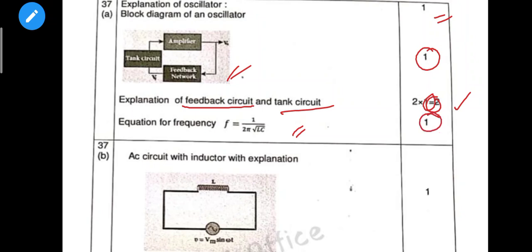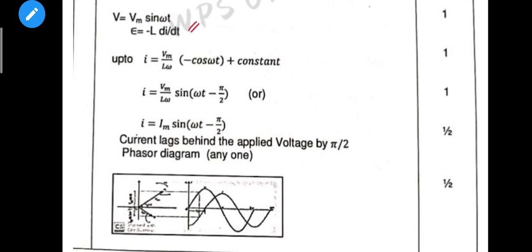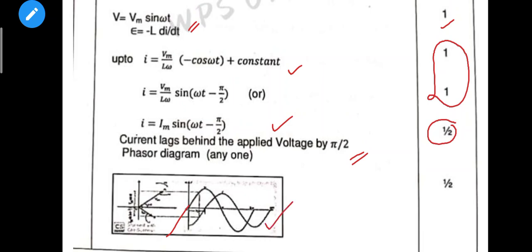Question 37 alternative: AC circuit with inductor — we call it the RLC circuit or inductive circuit, with resistive capacitor. The diagram is 1 mark. The equation v = Vm sin(ωt) is 1 mark. Substitute and derive the final equation — 2 marks in the second step. Current lags the applied voltage — that is half a mark. The phasor diagram is half a mark. Total marks possible: 4 and a half.